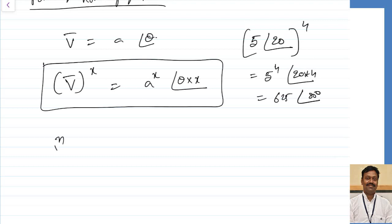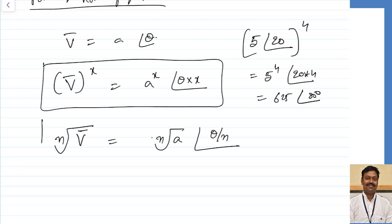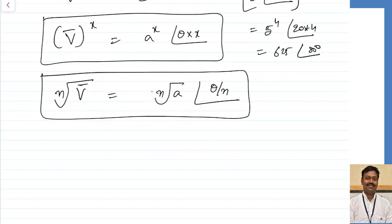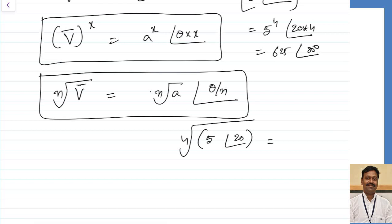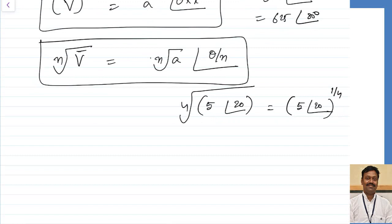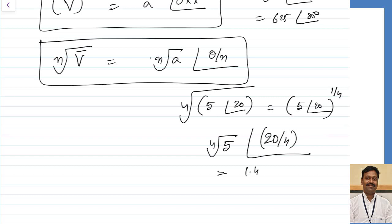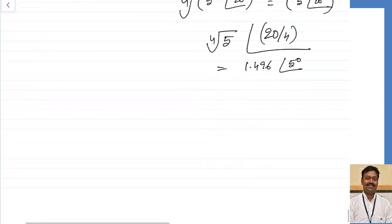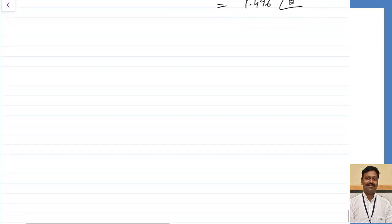For the nth root of V: take the nth root of the magnitude and divide the angle by n. For example, the fourth root of 5 at 20 degrees: take the fourth root of 5, and divide the angle by 4 to get 20/4 equals 5 degrees. This gives 1.496 at an angle of 5 degrees.